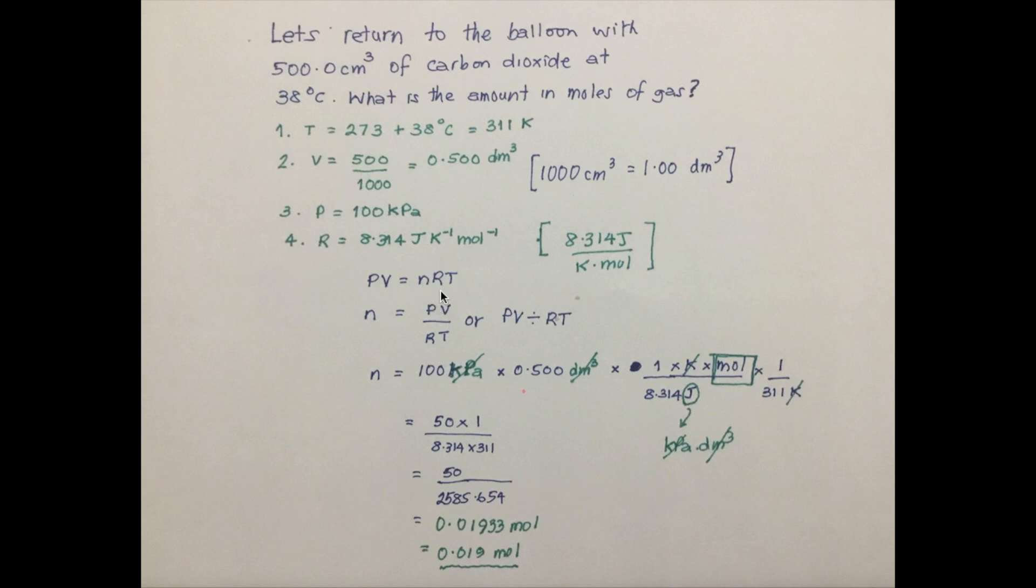Now we want to solve for N. We've got a value for R, for T, for P, and of course, for V. So let's rearrange things and make N the subject of the formula. Then we would be solving for PV over RT, or PV divided by RT. And that would be 100 kilopascals, P, multiplied by V, 0.500 dm³.